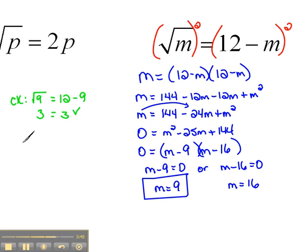What about the other one? For the other one, we'd have to say the square root of 16 equals 12 minus 16. So the square root of 16 would be 4 equals 12 minus 16 is negative 4. This is not true. So that tells us that this answer does not work.